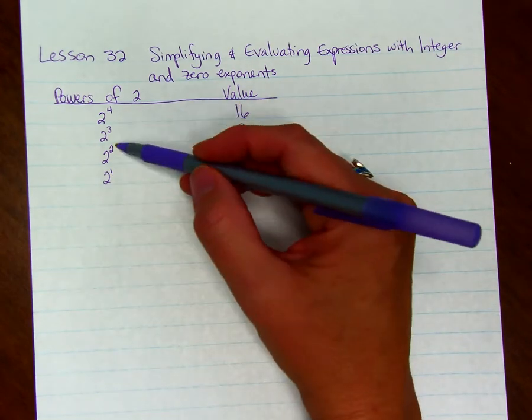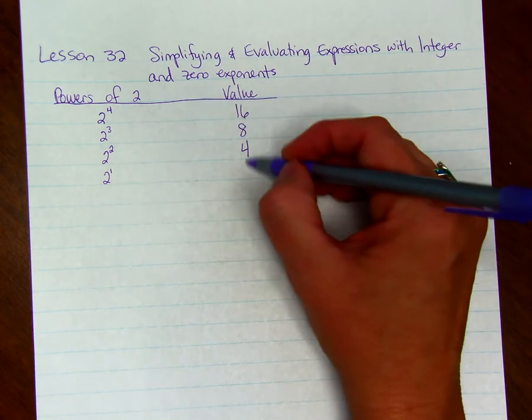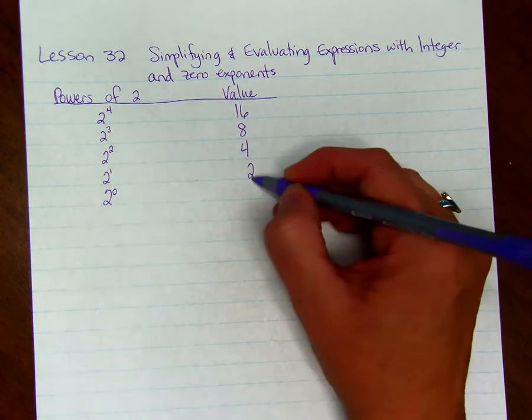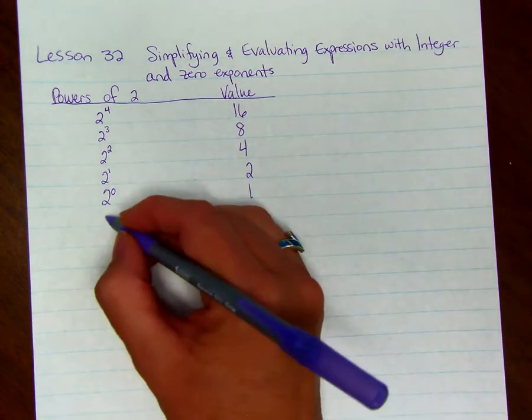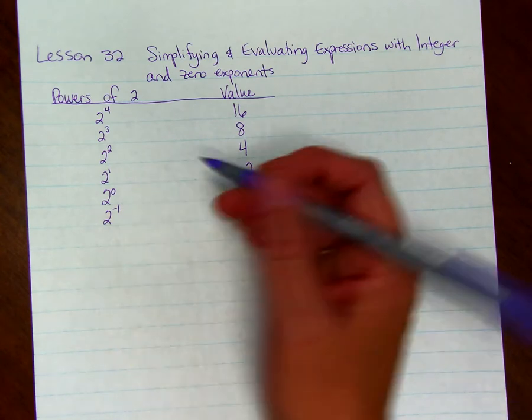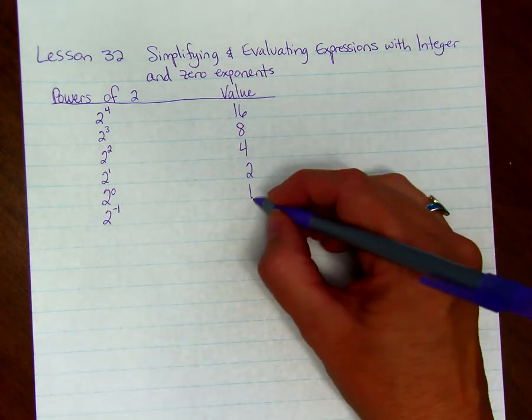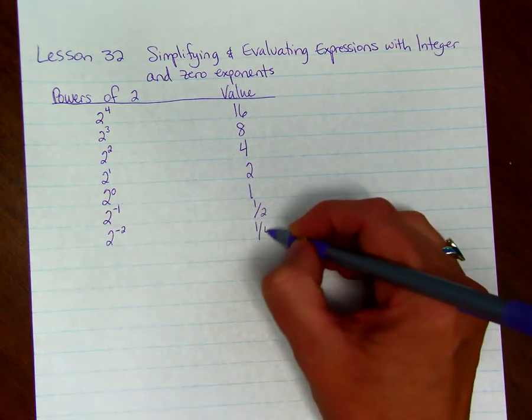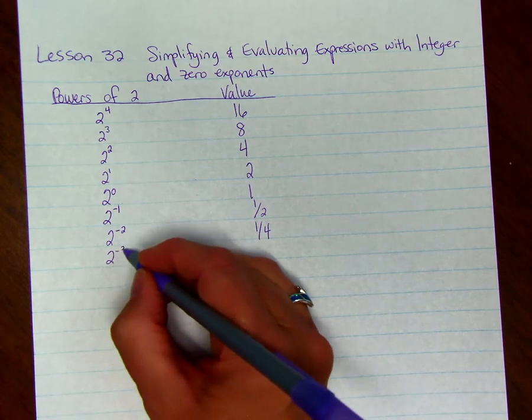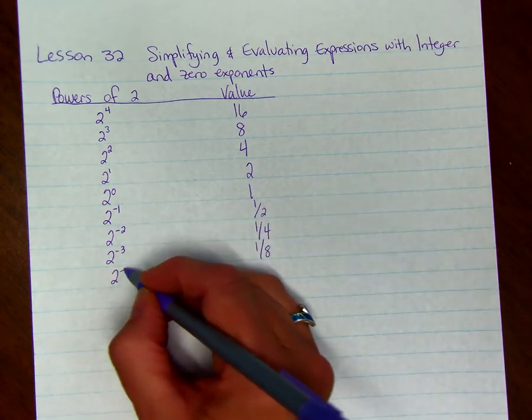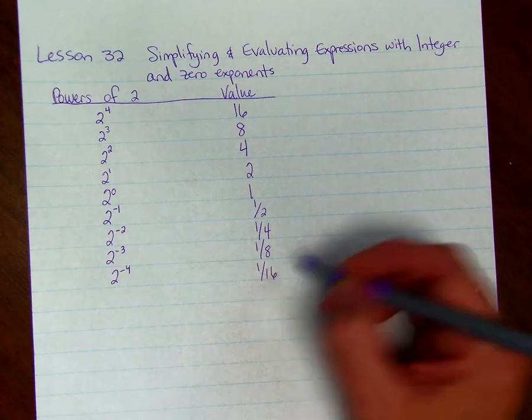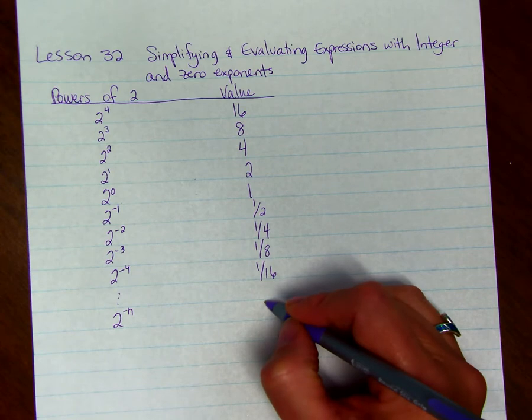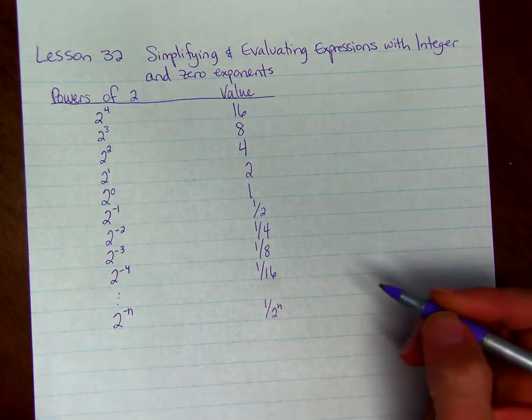Every time we go down 1 exponent, we half the value. 2 to the 0 is half of 2, which is 1. If we went to 2 to the negative 1, if we kept going with the pattern, this would be equal to 1 half. 2 to the negative 2 is half of a half, or a fourth. 2 to the negative 3 is 1 eighth. 2 to the negative 4th is 1 sixteenth, and so on. If we had 2 to the negative n, that equals 1 over 2 to the positive n power.